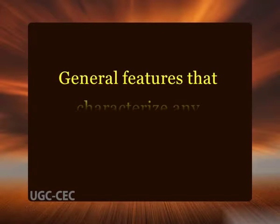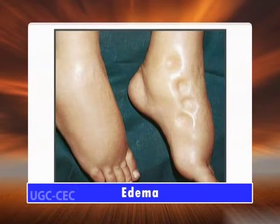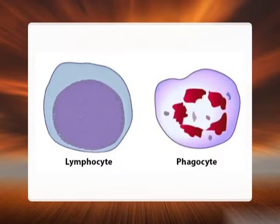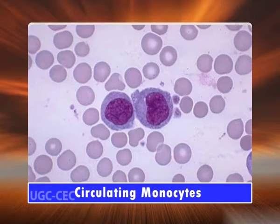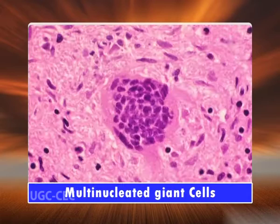Now coming to the general features that characterize any chronic inflammation. In contrast to acute inflammation, which is manifested by vascular changes, edema, and predominantly neutrophilic infiltration, chronic inflammation is characterized by mononuclear infiltration. Chronic inflammatory lesions are infiltrated by mononuclear inflammatory cells like phagocytes and lymphoid cells. Phagocytes are represented by circulating monocytes, tissue macrophages, epithelioid cells, and sometimes multinucleated giant cells. Macrophages comprise the most important cells in chronic inflammation.